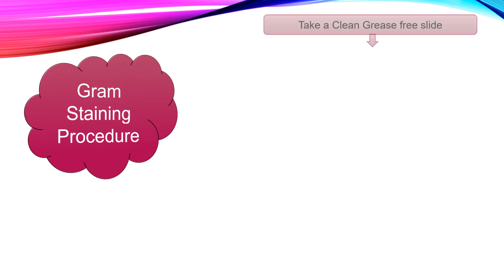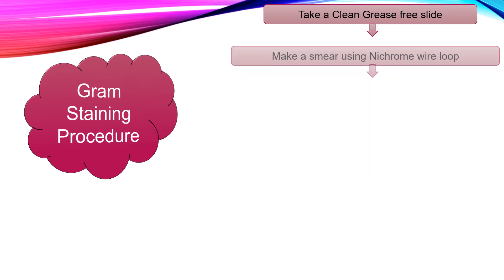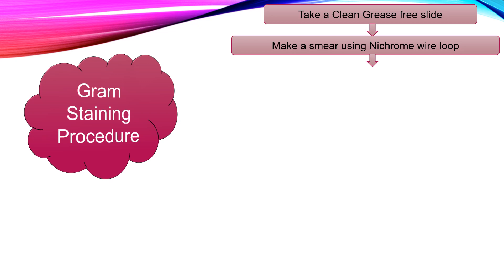Now let's see the Gram staining procedure. First of all, take a clean grease-free slide. Wash it properly with detergent, air dry it, and pass it 2-3 times through a Bunsen burner flame to get a clean grease-free slide. Now make a smear using a Nichrome wire loop. We use Nichrome wire loop because Nichrome is a metal that heats up fast as well as cools down fast, so it saves time in sterilization.